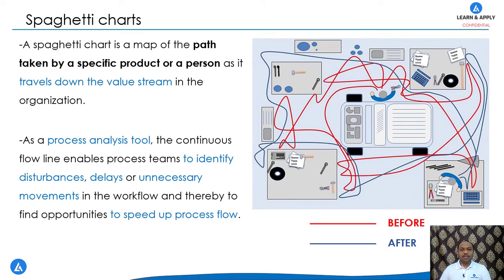Spaghetti diagram is a process analysis tool and this is helping the process teams to identify disturbances, delays or unnecessary movements in the workflow and thereby identify opportunities to eliminate them so that we can speed up the process flow.